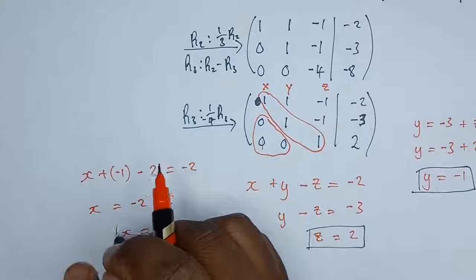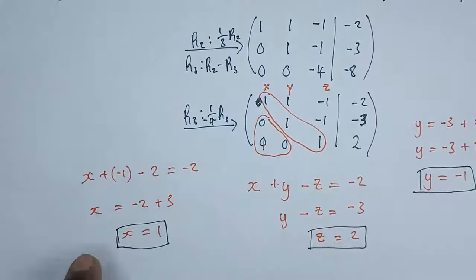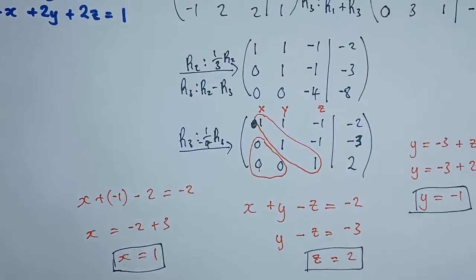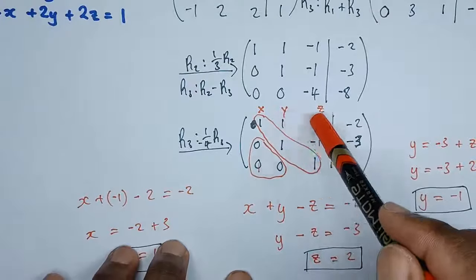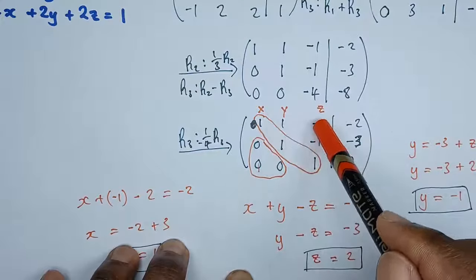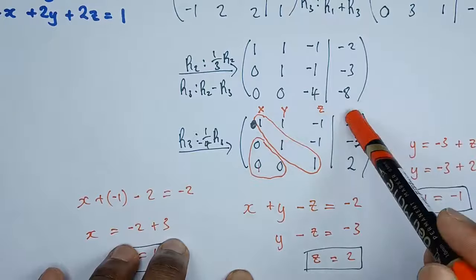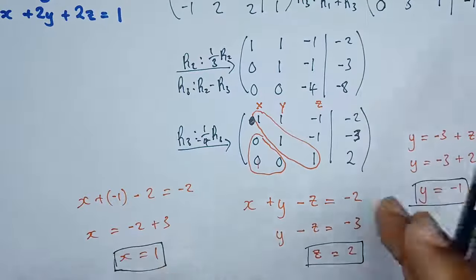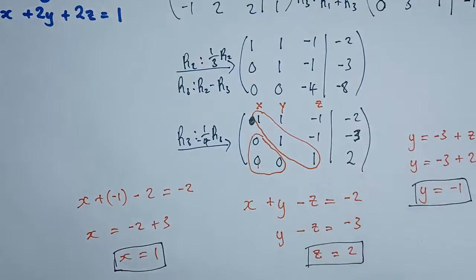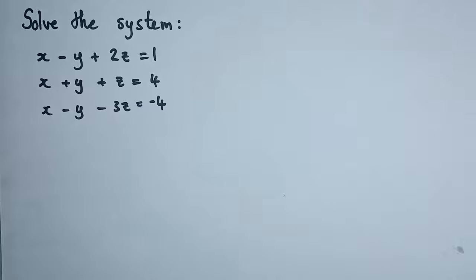This is the best way of solving the system using the Gaussian elimination method. One thing to note is that if you want to proceed further with this method, you can also put zeros in the upper-right positions of the matrix. If you do that, you'll directly get the three values for x, y, and z. But even leaving it in this upper triangular form, you can form the three equations and easily find all three variables.